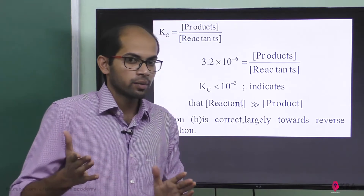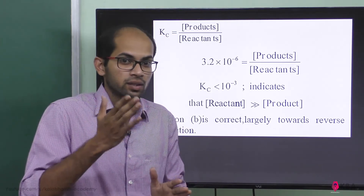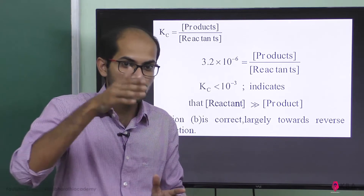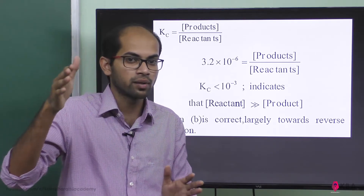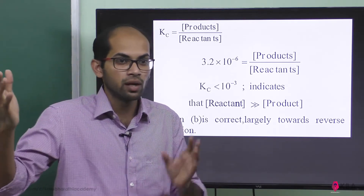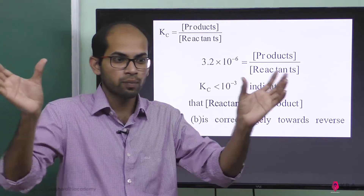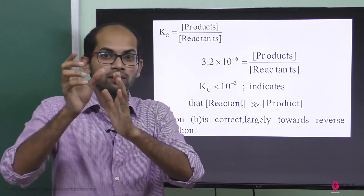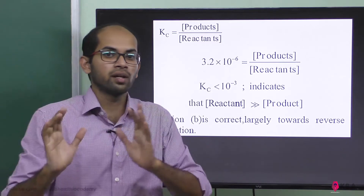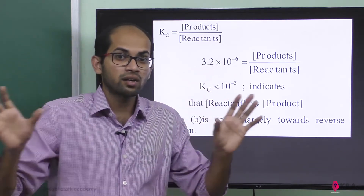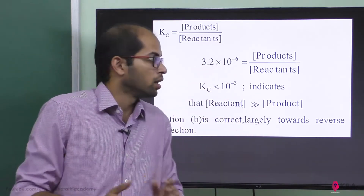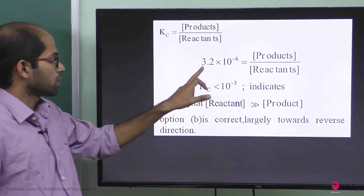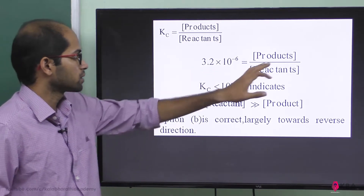What we learn is that when Kc is less than 10 to the power minus 3, the reaction favors the reverse direction. Here, the Kc value is 3.2 × 10 to the power minus 6.